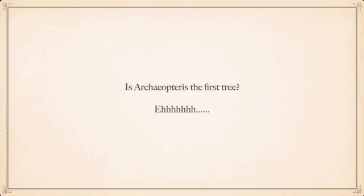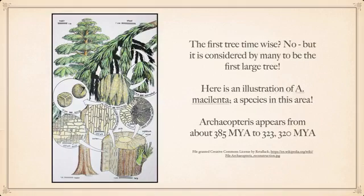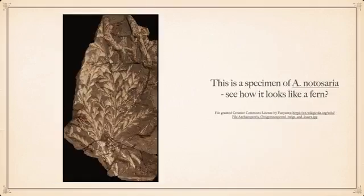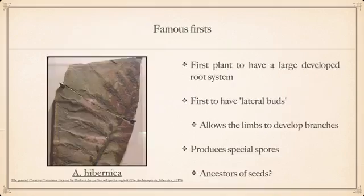Is it the first tree? No, actually. There are several trees that predate it, but it is considered by many to be the first large tree. Here is Archaeopteryx massilenta, which is a species in the general northeast. Overall, Archaeopteryx appears from about 385 million years ago to around 320–323 million years ago. They could be over 100 feet tall — some clocked at over 130. They showed the beginnings of growth rings, their trunks were roughly three feet wide, and because of all this, we can determine many specimens were about 50 years old.